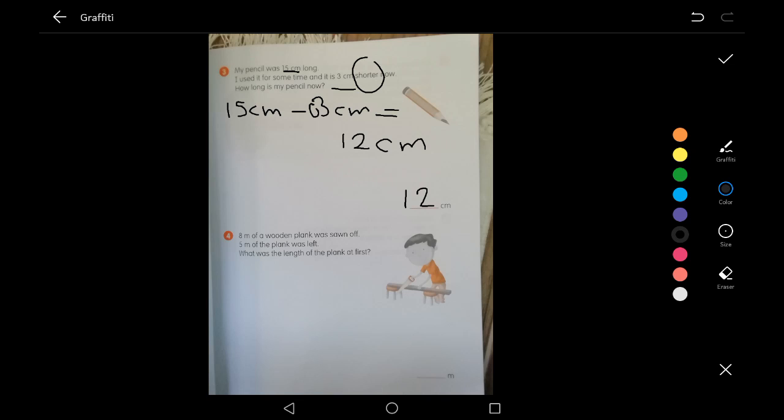So question 4. 8 meters of wooden blank was sawn off. 5 meters of the blank was left. What was the length of the blank at first? So here the keyword is left.